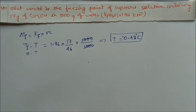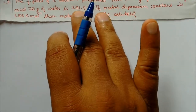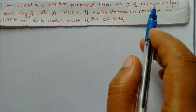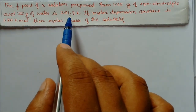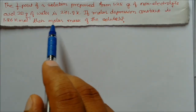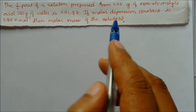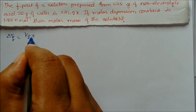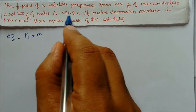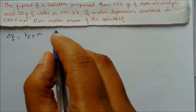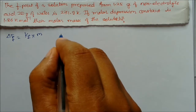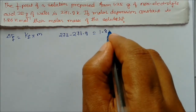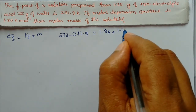Next problem: the freezing point of a solution prepared from 1.2 grams of a non-electrolyte and 20 grams of water is 271.9 Kelvin. The molar depression constant is given; find the molar mass of the solute. Using delta Tf = Kf × m: the initial freezing point of water is 273 Kelvin, so delta Tf = 273 minus 271.9 = 1.1. Kf = 1.86, weight = 1.2 grams.